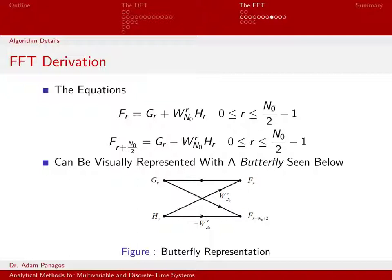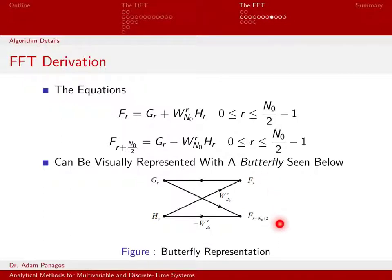We can represent these equations graphically. Once I know g_r, h_r, and w_{n_0}^r, this figure shows how to compute f_r and f_{r + n_0/2}. This butterfly circuit, or butterfly representation, is a way to graphically represent these equations. It makes it clear that given these two values and W, I get out two points in my DFT. It's a nice way to visualize what's going on.